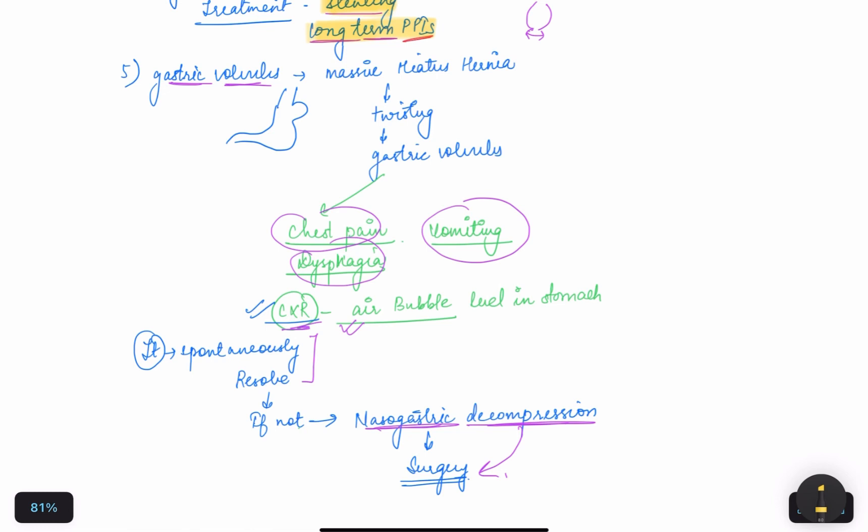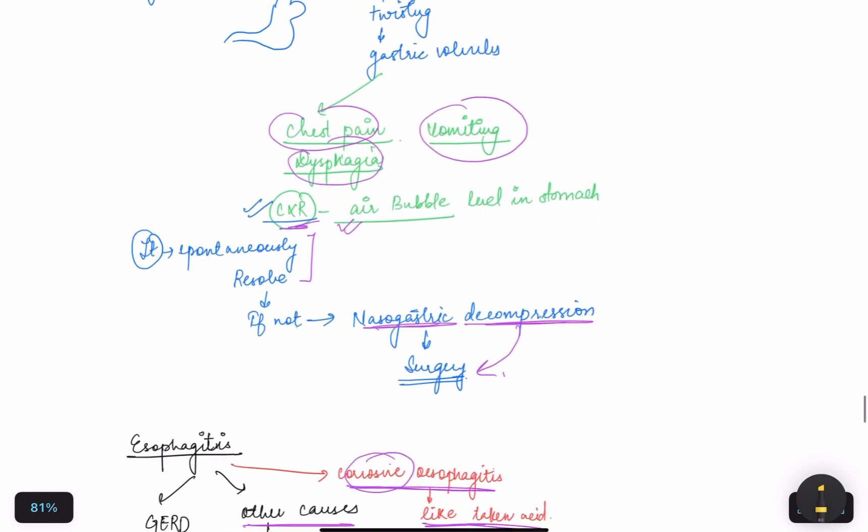Gastric volvulus is when the massive hiatal hernia is twisted around the esophagus and it will lead to chest pain, dysphagia, and vomiting. On the chest x-ray you can see the air bubble level in the stomach.